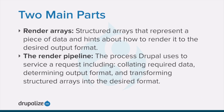The Render API consists of two main parts: structured arrays that provide developers with a way to represent the data or content in their application and various hints about how that data should be rendered. In addition to these structured arrays, there's also the rendering pipeline — the process that Drupal will go through to service a request, including gathering render arrays from various system components, determining what format the response should be in, handling caching and validation, and ultimately rendering a structured array into the desired output format.